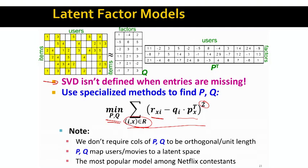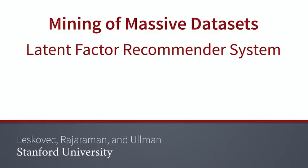A few things to note. The difference from SVD is that here P and Q are completely arbitrary — we don't require that columns are orthonormal, meaning vectors don't need to be unit length and orthogonal. We can think of P and Q as mappings of users and movies into this low-dimensional space. This was one big breakthrough in the Netflix challenge: latent factor recommender systems were the most widely used and most successful method in the whole competition. Next, we will learn how to actually solve this latent factor optimization problem.